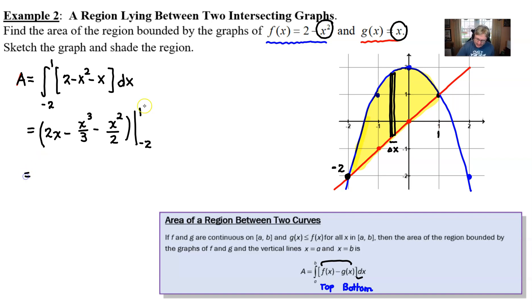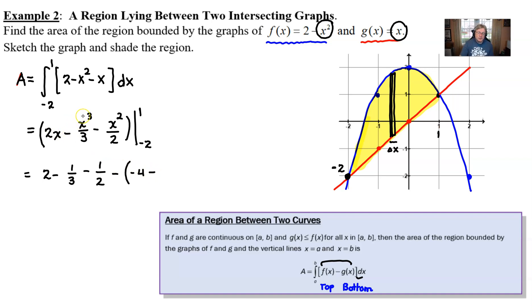Plugging 1 in for x gives 2 minus one-third minus one-half. Now subtract — use parentheses — and plug negative 2 in for all x's. 2 times negative 2 is negative 4. Negative 2 cubed is negative 8, so that's minus negative 8 thirds. Plugging negative 2 in and squaring gives 4, divided by 2 is 2. Two negatives combine to simplify the expression as we go.